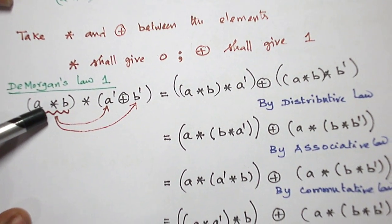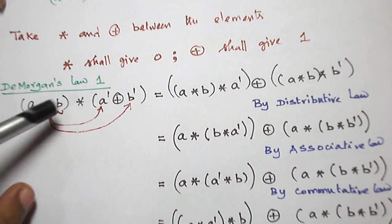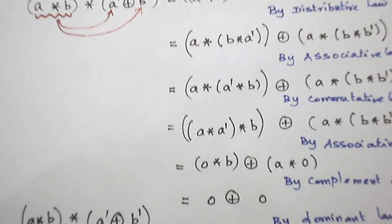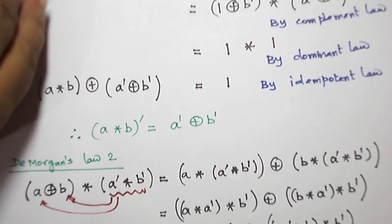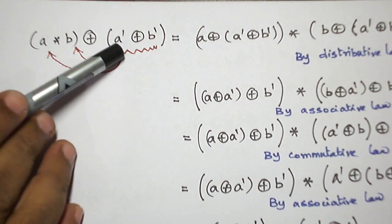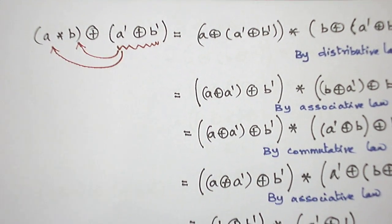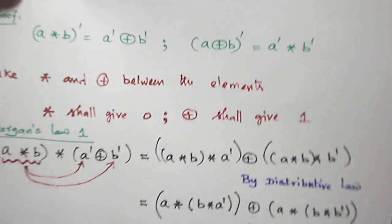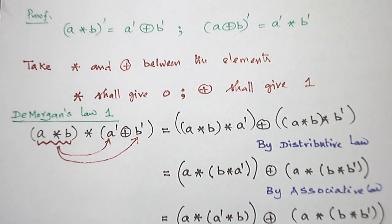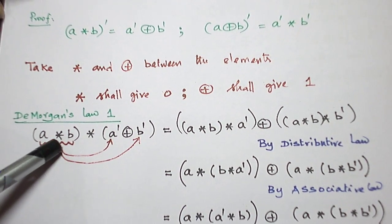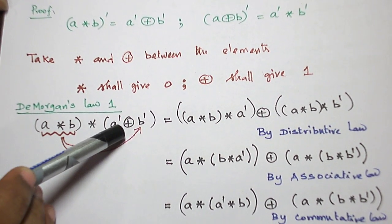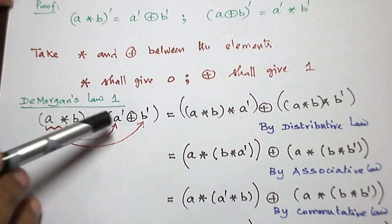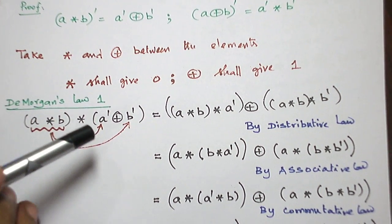I am going to take star between these two elements — is it 0? I am going to check. Similarly, I am going to take plus between the two elements — is it 1? I am going to check. So, let us take the star between A star B and A dash plus B dash.